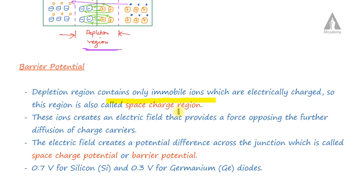The depletion region creates an electric field. This electric field opposes further diffusion of electrons and holes across the junction.